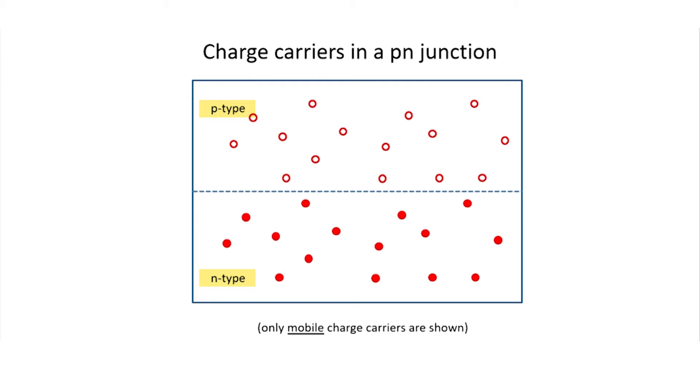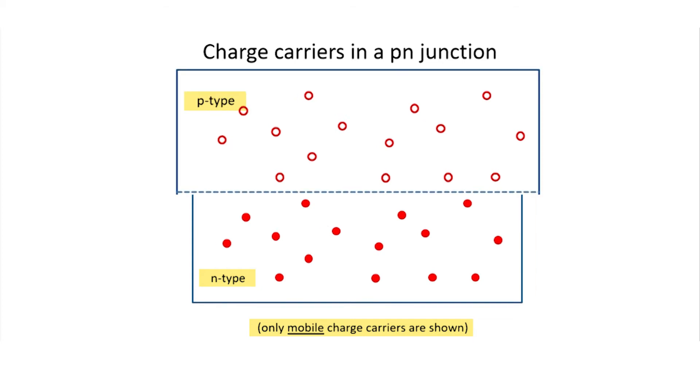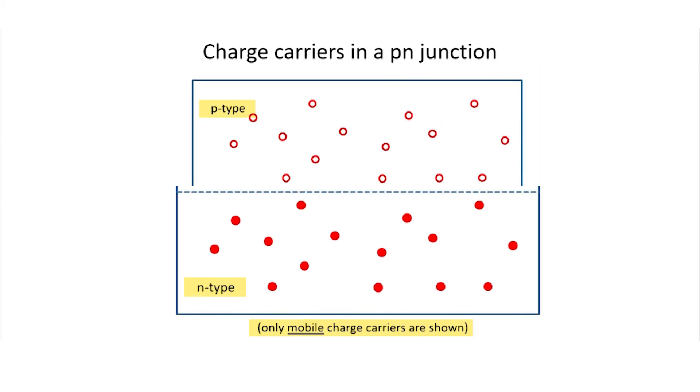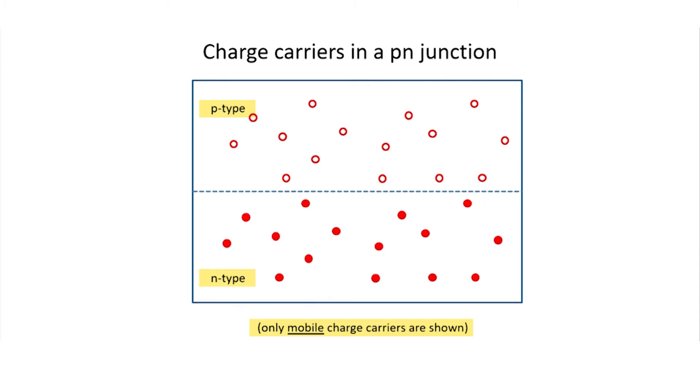Now, in this situation here, I'm showing the mobile charge carriers. What do you think is going to happen with all of these holes up here and all of these electrons down here since they're mobile? Well, they're going to diffuse around the crystal, just like gas spreading out in a room.